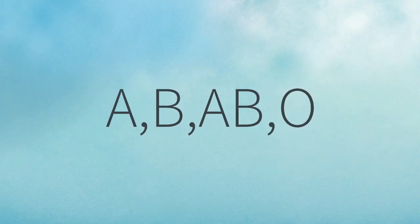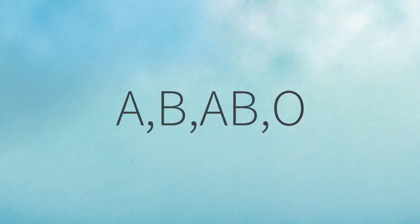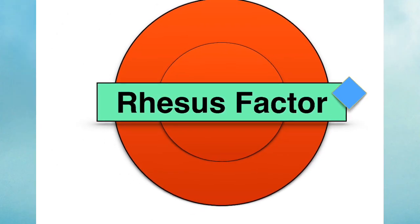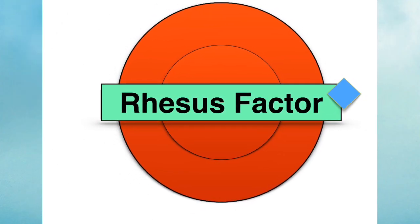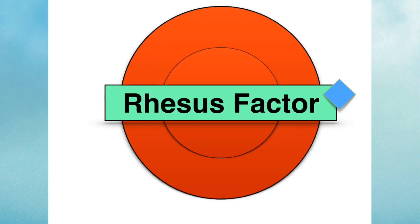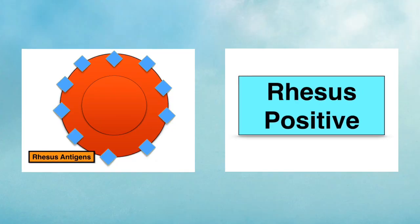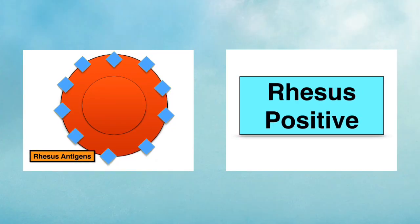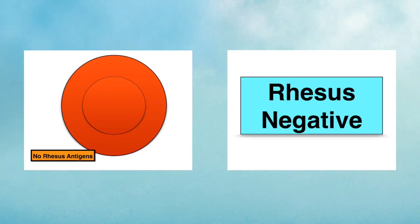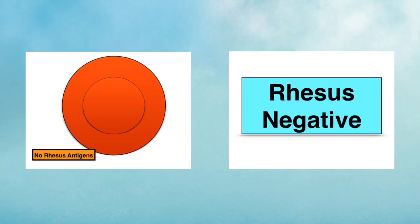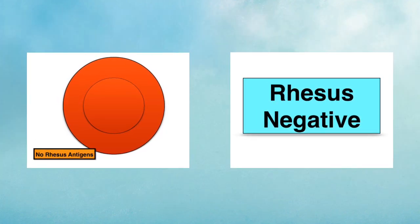So there are four possible blood groups: A, B, AB and O. The second system for classifying blood is the presence or absence of the rhesus factor on the surface of your red blood cells. If you do have the rhesus factor on the surface of your red blood cells, then you're rhesus positive. If you do not have the rhesus factor, then you're rhesus negative.